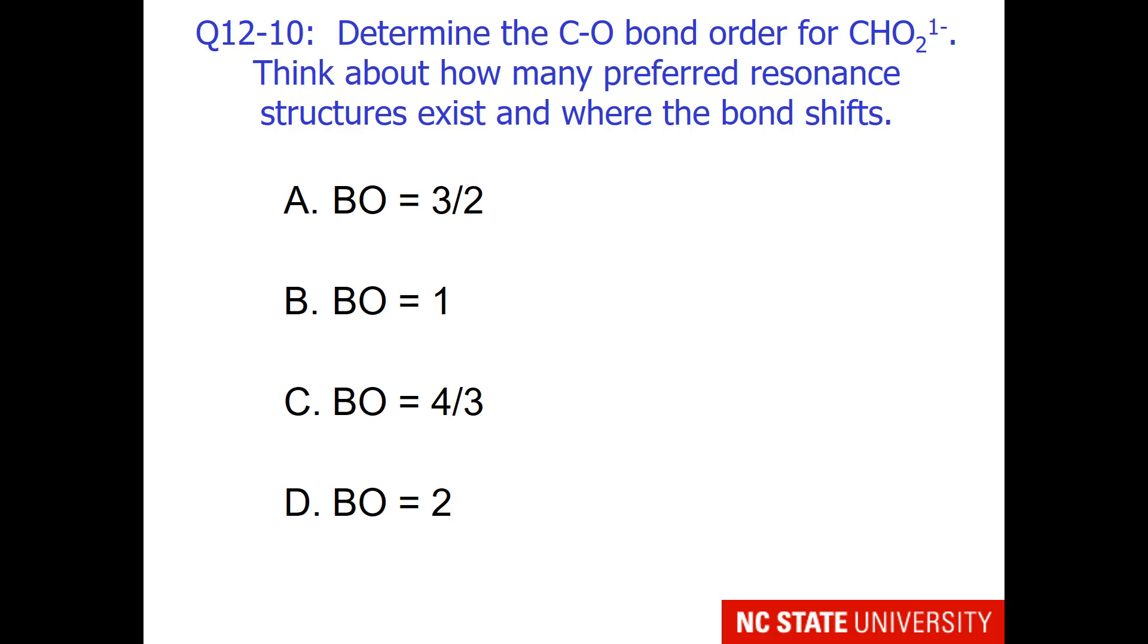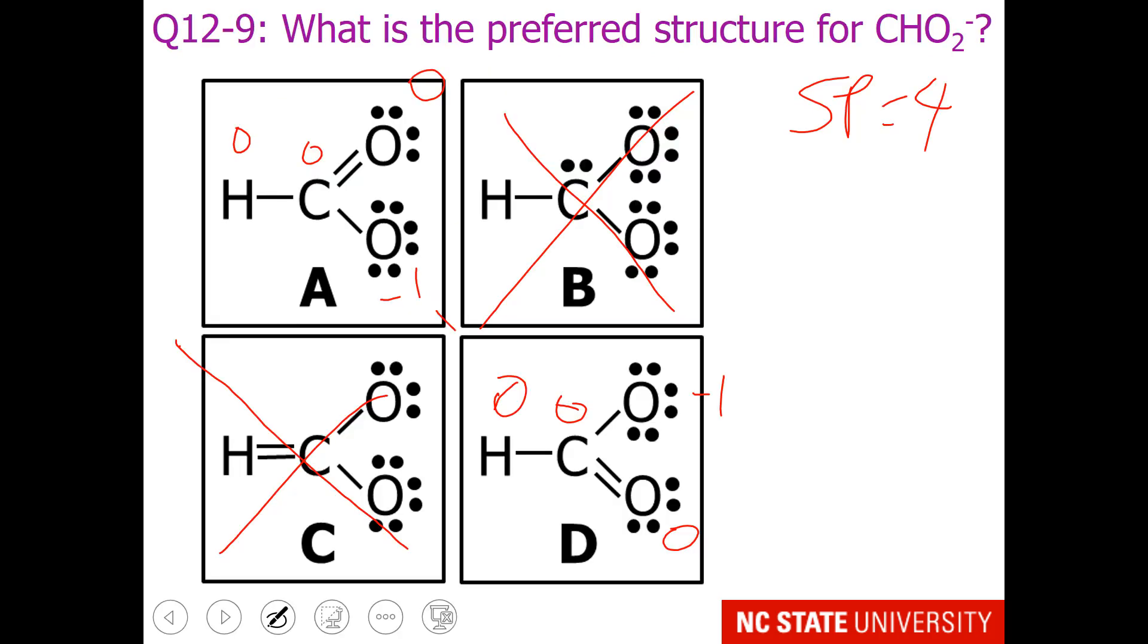And we should think about how many preferred resonance structures exist and where the bond shifts. So let's go back to that screen. Structures A and D are my possibility. And these are equivalent resonance structures. When you get bond order, it should be the number of bonds divided by the bonding regions where resonance occurs. So let me put a circle around the changes between compounds A and D.